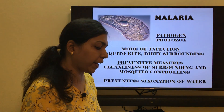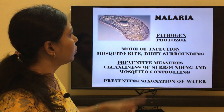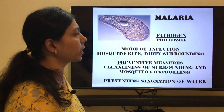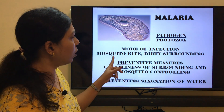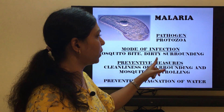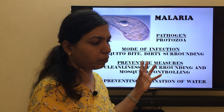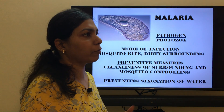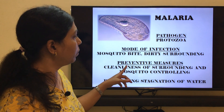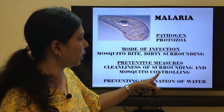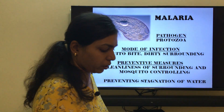Malaria is caused by a protozoa. The mode of infection is mosquito bites and dirty surroundings — again, mosquitoes breed in stagnant water, so you must ensure there is no water stagnation around you. Prevention measures include cleanliness of surroundings, mosquito control, and preventing stagnation of water.